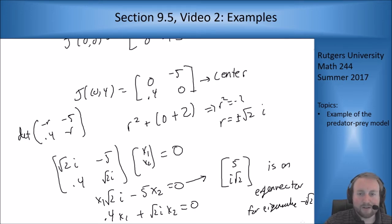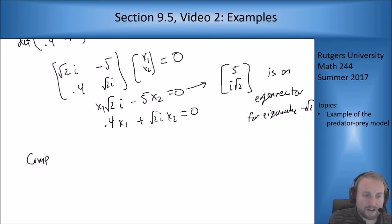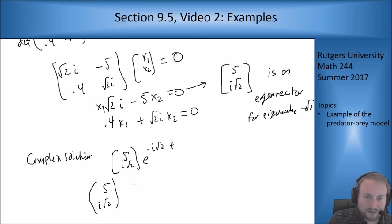Now let's go ahead and solve out for the general solution using this method. So the complex solution is [5; i root 2] e to the minus i root 2t.